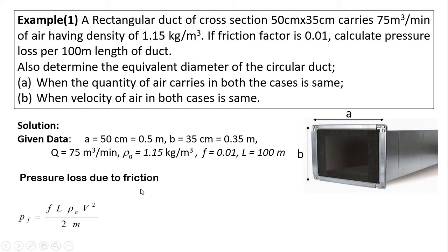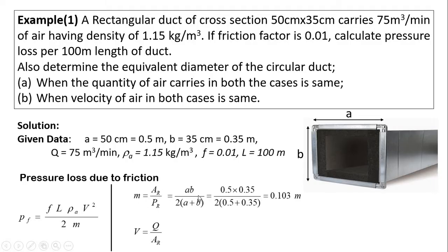First we calculate pressure loss due to friction using the formula: Pf = f·L·rho·v² divided by 2m, where m is the hydraulic mean depth. Hydraulic mean depth m = cross-sectional area divided by wetted perimeter. Velocity v = Q divided by cross-sectional area. For the rectangular duct, cross-sectional area = a × b and wetted perimeter = 2(a + b). By putting the values, hydraulic mean depth m = 0.103 m.